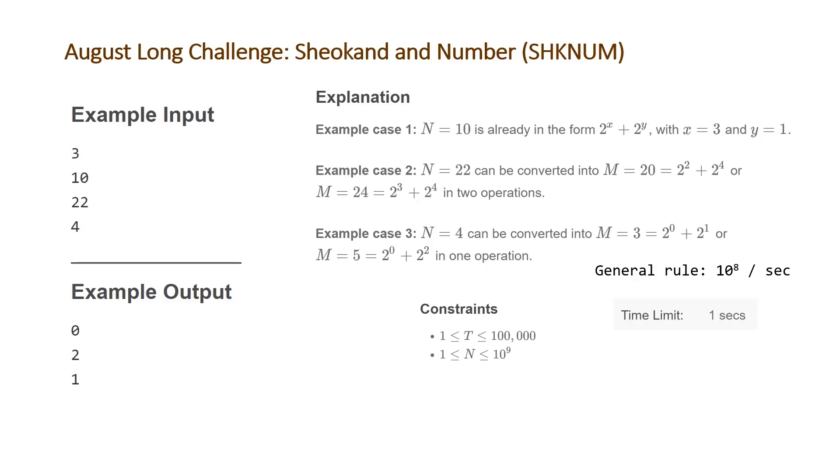we know that a quadratic algorithm is not going to work. For each test case, we need to do better than linear because otherwise we'd end up with 10 to the 5 squared, which is 10 to the 10, greater than 10 to the 8. So we'd get TLE, time limit exceeded. If we know we can't have linear, the next thing is log n. And whenever you need log n, think binary search.